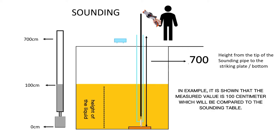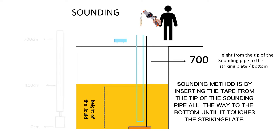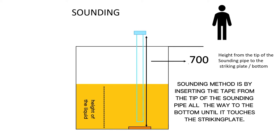In example, it is shown that the measured value is 100 cm, which will be compared to the sounding table. Sounding method is by inserting the tape from the tip of the sounding pipe all the way to the bottom until it touches the striking plate.